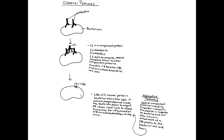C3B causes pores in the bacterial wall and then lysis, or it can attract phagocytes. The bacteria will lyse or burst open, or phagocytes may be attracted to make the bacteria easier to engulf. Alternatively, mast cells can be caused to release histamine, which causes inflammation and increases blood flow to the area, bringing in more cells to eliminate the pathogen.